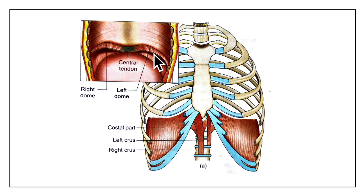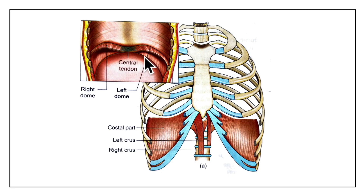The muscle fibers are grouped into three parts: the sternal, the costal, and the lumbar part. We will be looking at each of these parts in detail in the next diagram.